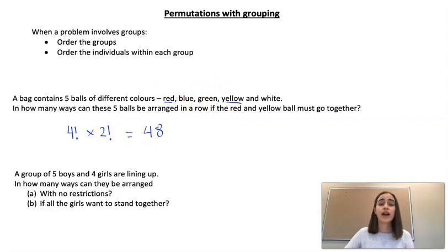Our second example says that we have a group of five boys and four girls lining up and we want to know how many ways they can be arranged. For part a, we're just saying without any restrictions.